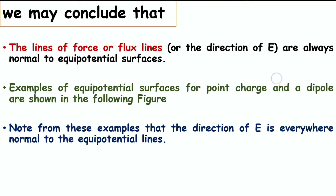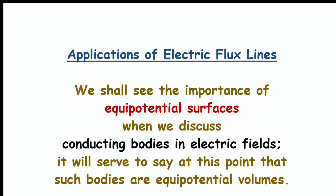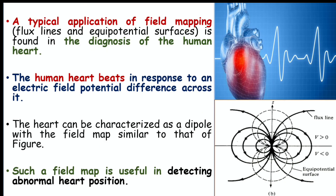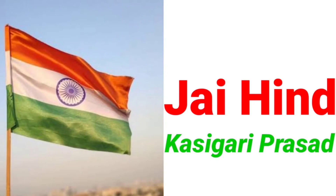A typical application of field mapping — flux lines and equipotential surfaces — is found in the diagnosis of the human heart. The human heart beats in response to an electric field potential difference across it. The heart can be characterized as a dipole with a field map similar to that of a dipole, and such a field map is useful in detecting abnormal heart position.